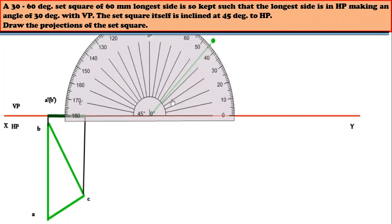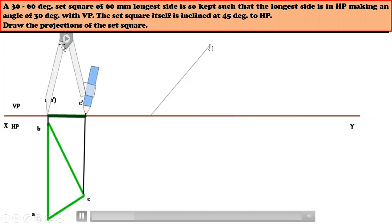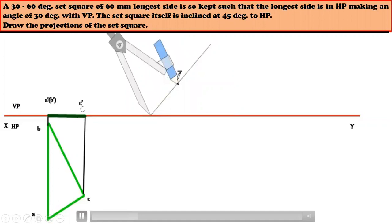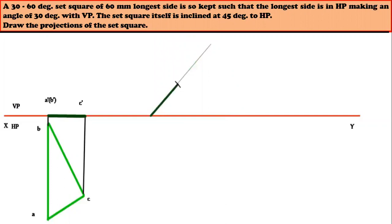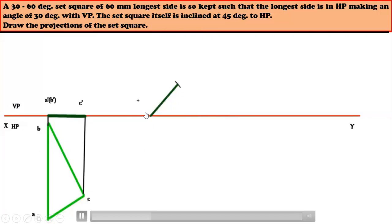This completes the first position. Next is the inclination with respect to HP. Draw an inclination line at 45 degrees. In the compass, measure A-dash to C-dash, with A-dash on the XY line, and cut an arc on the inclination line. A-dash to C-dash should be a visible line. Trim the extra lines.